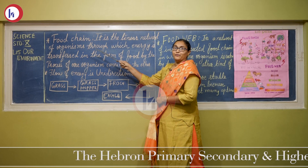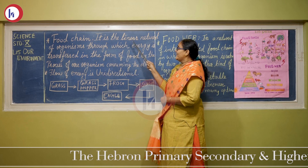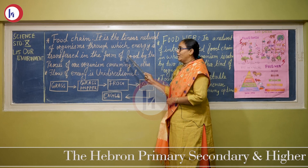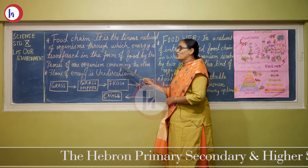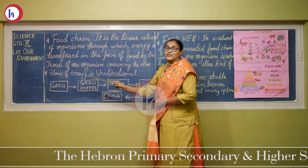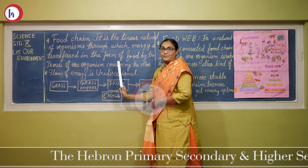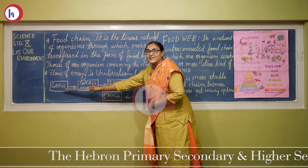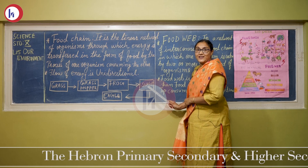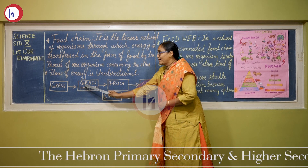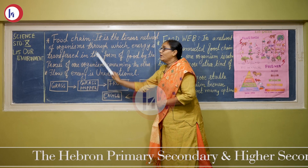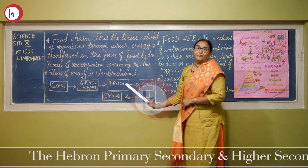The next topic is food chain. A food chain is the linear network of organisms through which energy is transferred in the form of food by the process of one organism consuming another. For example: grass is eaten by grasshopper, grasshopper is eaten by frog, frog is eaten by snake, and snake is eaten by eagle. This flow of energy through a linear network is called a food chain.